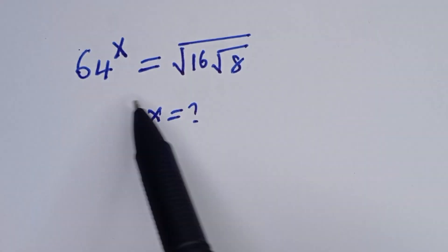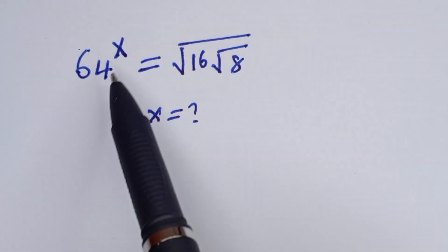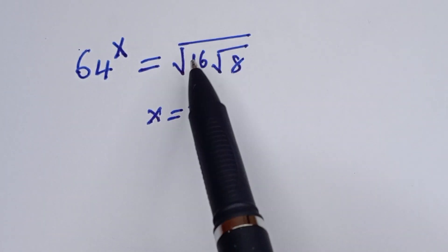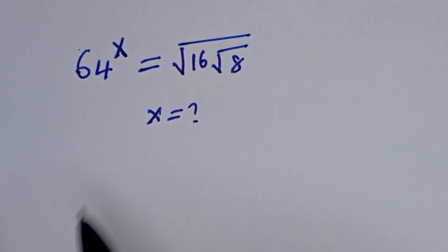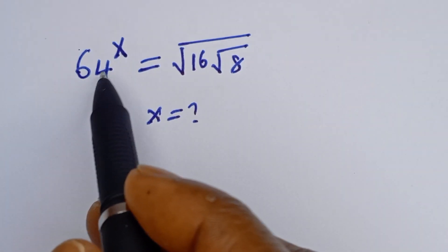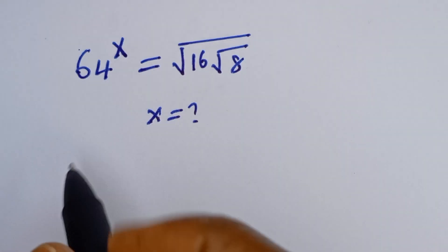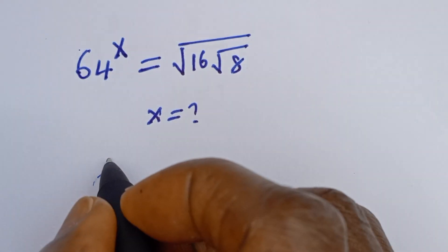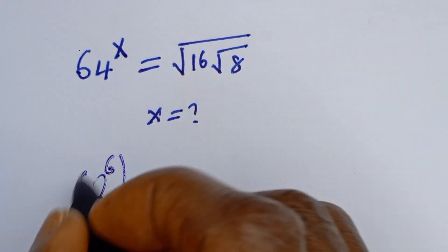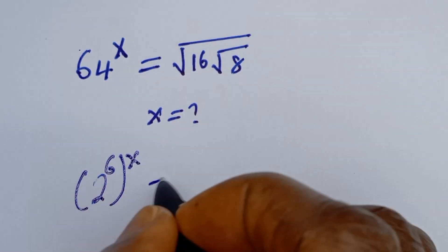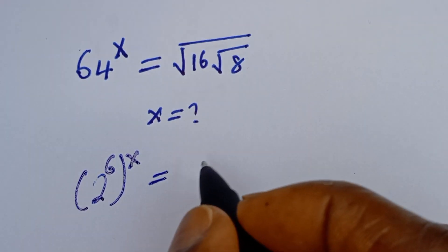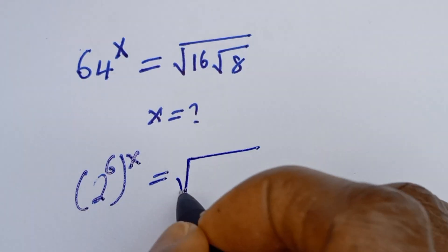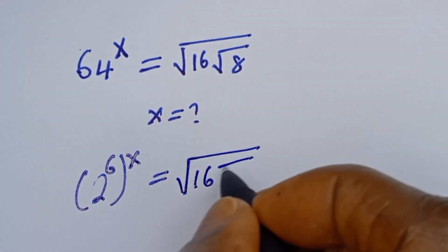Hello. How to solve for s in this equation: 64 to the power of s is equal to square root of 16 times square root of 8. Here, 64 to the power of s can be written as 2 to the power of 6, then to the power of s.